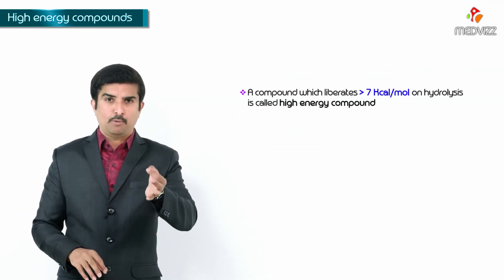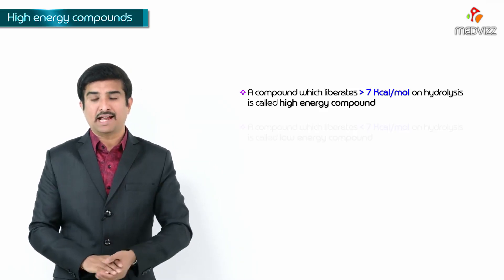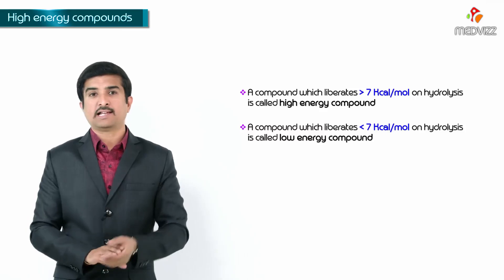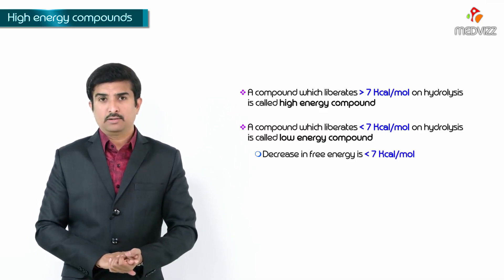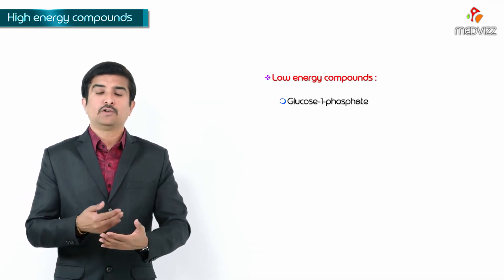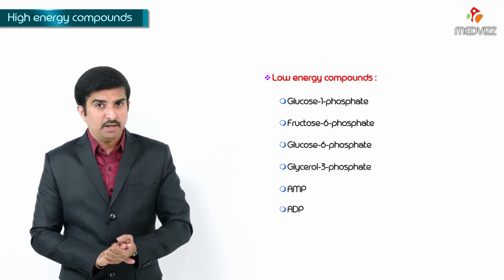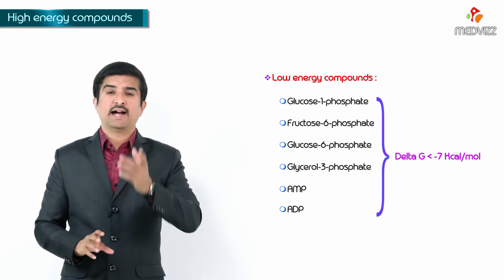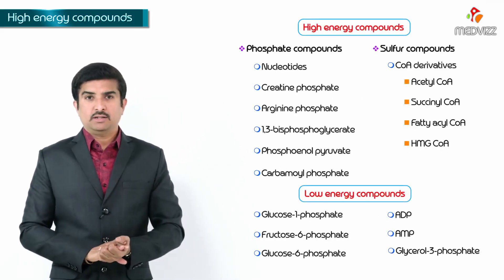A compound which liberates greater than 7 kilocalories per mole on hydrolysis is called a high energy compound. Any compound which liberates less than 7 kilocalories per mole on hydrolysis is called a low energy compound, meaning the decrease in free energy — delta G — will be less than minus 7 kilocalories per mole. Examples of low energy compounds include glucose-1-phosphate, fructose-6-phosphate, glucose-6-phosphate, glycerol-3-phosphate, AMP, and ADP.